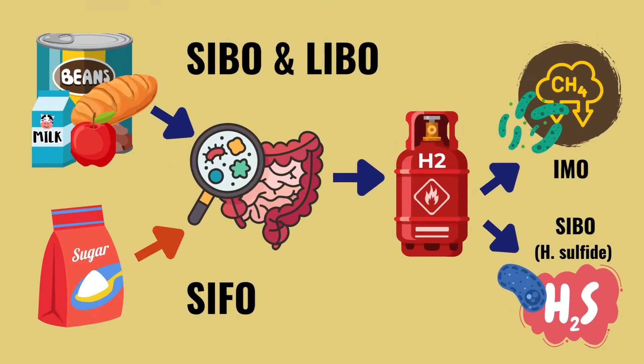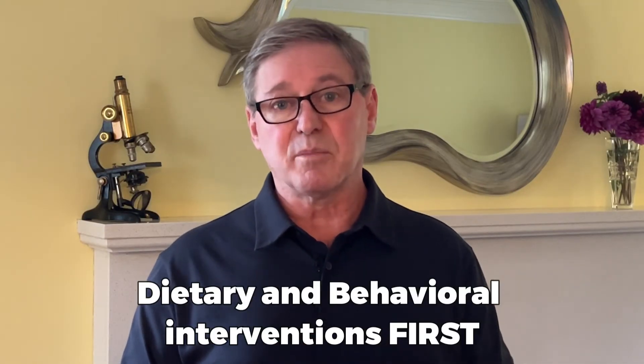SIBO and LIBO bacteria, depending on the strains, feed on a wide range of mostly carbohydrates from simple sugars to complex fibers and starches, while SIFO feeds on simple sugars. IMO or methanogens use hydrogen for fuel, but that hydrogen comes from bacteria fermenting mostly carbohydrates. Likewise, sulfate-reducing bacteria also depend on hydrogen to produce hydrogen sulfide. This is why I always recommend dietary and behavioral interventions first. Reducing fermentable material in your diet and improving digestion is critical for addressing all forms of dysbiosis, while also identifying and addressing potential underlying or contributing causes.